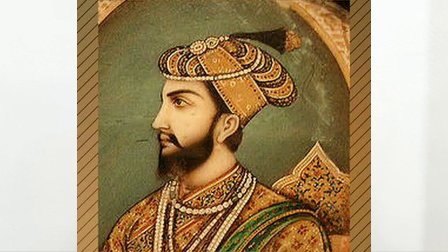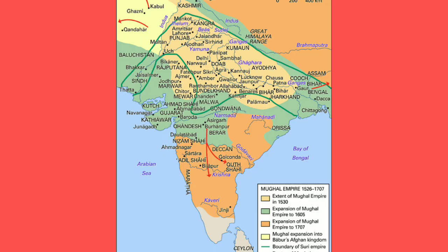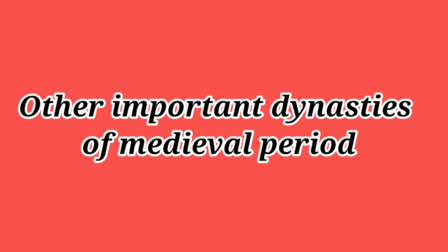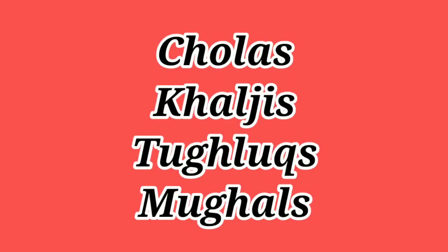According to a Sanskrit Prashasti — Prashasti means something written in praise of the king — the ruler of Delhi, Sultan Giyasuddin, had a kingdom that spread from Bengal in the east to Afghanistan in the west. Some dynasties were also able to build empires during the medieval period, including the Cholas, Khiljis, Tughlaqs and Mughals, who were equally important dynasties that set up their empires in the medieval period.